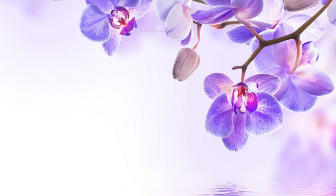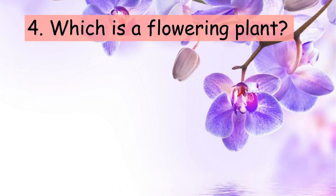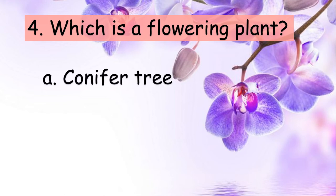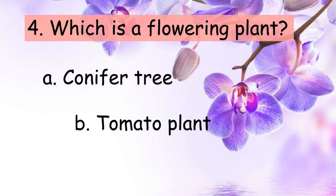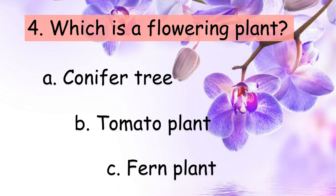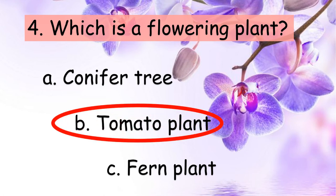Next, number four: which is a flowering plant? Choose your answer — A, B, or C. The correct answer is B. Tomato plant is a flowering plant. Very good!